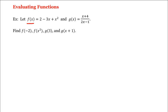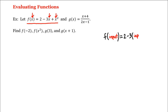We're given that f of x is equal to 2 minus 3x plus x squared. So when we are evaluating this function at any input, we put the input here and here. So we have f of any input is equal to 2 minus 3 times that input, plus that input squared.